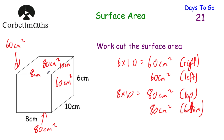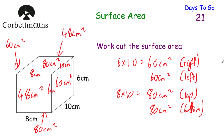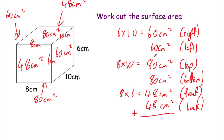Now we just need to do the front and the back. The front is 8 centimetres wide and 6 centimetres high, so 8 times 6 equals 48 centimetres squared. That's the front and also the back, so 48 centimetres squared each. Now we just need to add them all up: 60 + 60 + 80 + 80 + 48 + 48 = 376 centimetres squared. Well done if you got that.